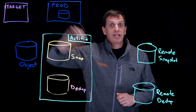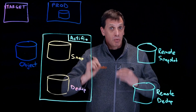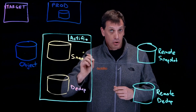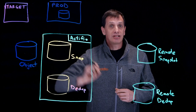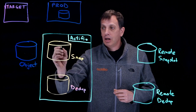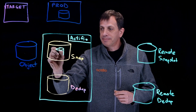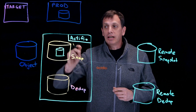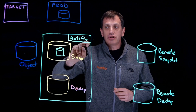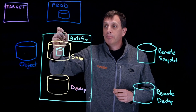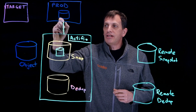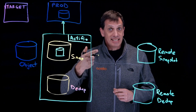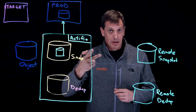So we have a production database and we want to protect it and create an image of it — a golden copy — in our snapshot pool. So we create a staging disk. We then, using the interfaces of the Actifio appliance itself, present this staging disk to the production host. That's NFS, iSCSI, or fiber channel.